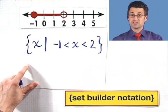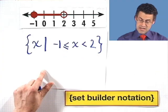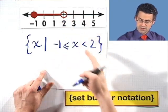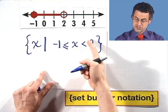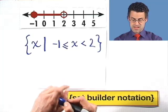Now, which endpoints do we want to include? Well, it's colored in here at minus 1, so I want less than or equal to here, but it's not colored in here, so I'm going to have this be x is strictly less than 2. And this is the set builder way of expressing that particular set.